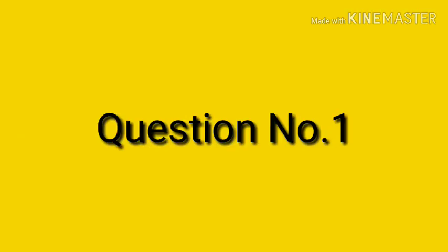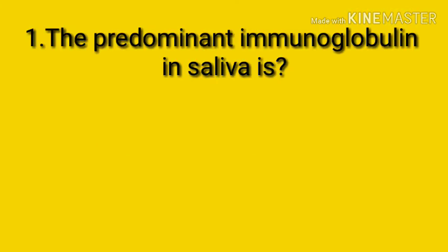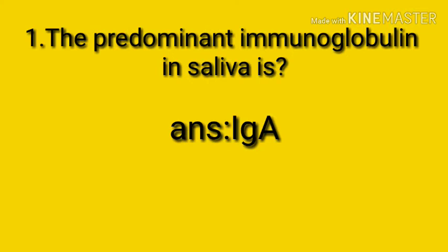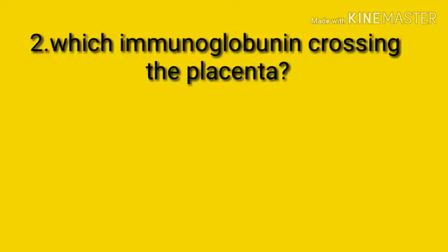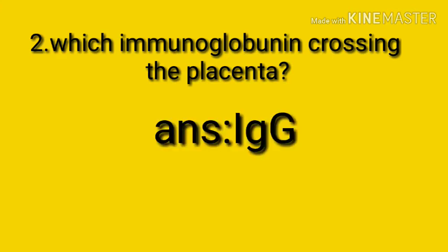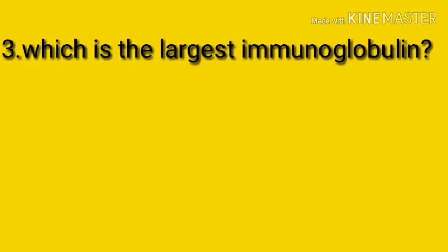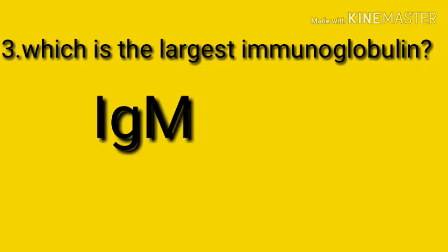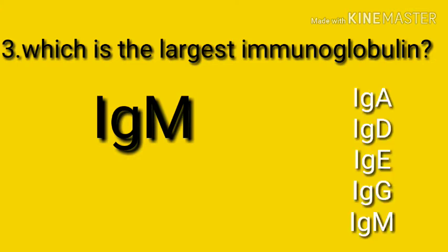Question number one: the predominant immunoglobulin in saliva is IgA. Question number two: which immunoglobulin crosses the placenta? IgG is the immunoglobulin that crosses the placenta. Question number three: which is the largest immunoglobulin? IgM. To remember this, order the immunoglobulins alphabetically: immunoglobulin A, immunoglobulin E, immunoglobulin G, and immunoglobulin M.